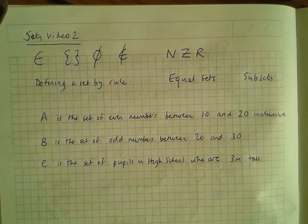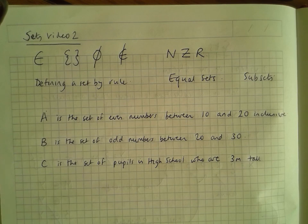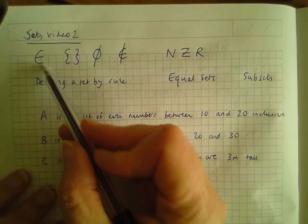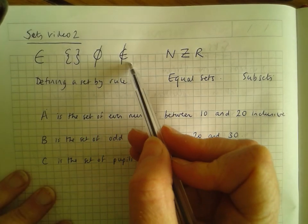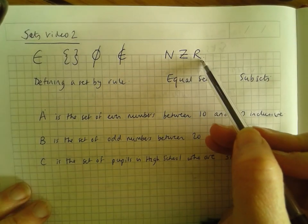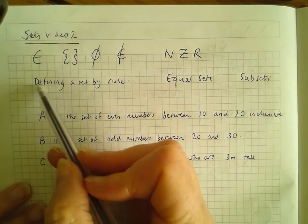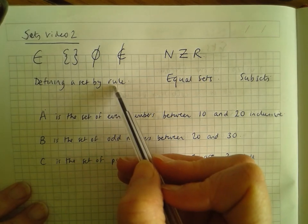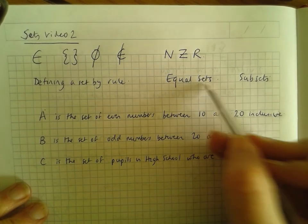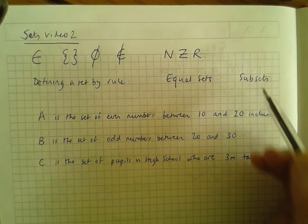This is sets video two. We've been introducing sets and talking about what a set is. We're going to go through that again briefly, then look at some of these symbols we come across in sets — these three symbols here and what they stand for. We'll also talk about defining a set by a rule, and about equal sets and subsets.